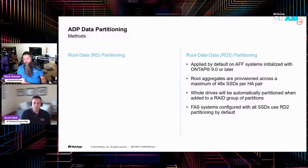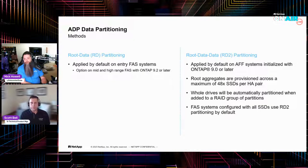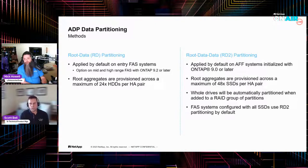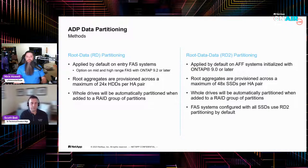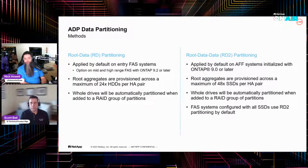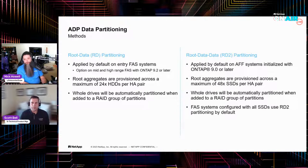For FAS systems, we do have RD partitioning. This is applied by default for all FAS systems, and it's optional on mid and high range systems that run ONTAP 9.2 or later. Root aggregates on spinners are provisioned across a maximum of 24. That's not saying you can have a maximum of 24 drives — it's saying the root aggregates are provisioned across 24 drives. And just like RD2, it doesn't mean you can't exceed 24. Much like SSDs, if you want to add a whole drive into a RAID group that's already composed of partitions, it'll automatically slice and dice it for you.